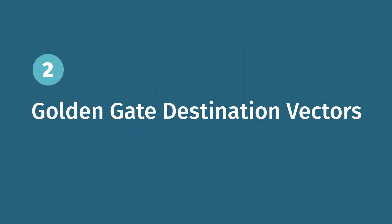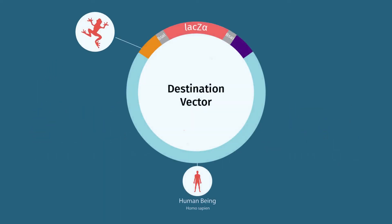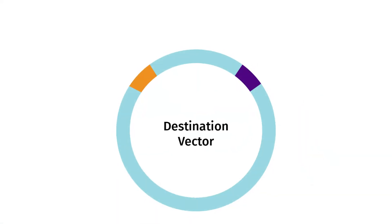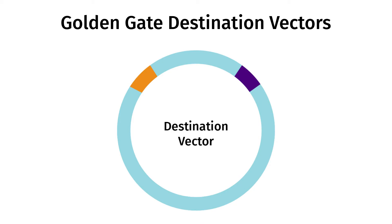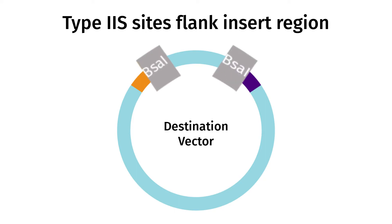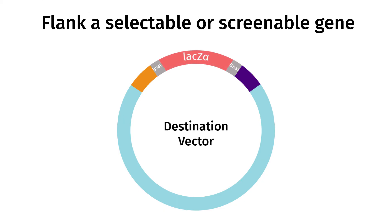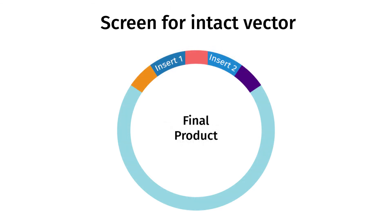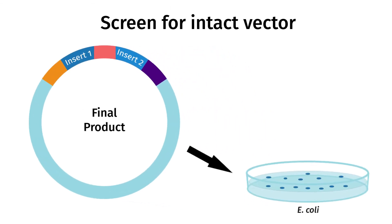Golden Gate assemblies are built using a destination vector and one or more fragments of interest. Many Golden Gate destination vectors are available through commercial sources or Addgene. Alternatively, you can adapt a vector for Golden Gate assembly in your lab. The destination vector must contain two type 2S restriction sites flanking the desired insert region. Ideally, the enzyme should flank a selectable or screenable gene such as LACZ or the CCDB suicide gene. After Golden Gate assembly and transformation, the presence or absence of this gene can be used to screen for intact vector.